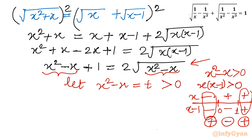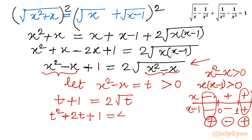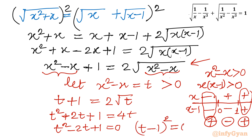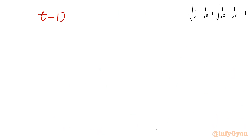Now let us consider t + 1 equals 2 square root of t. Squaring both sides: t² + 2t + 1 equals 4t. Taking 4t to the left: t² − 2t + 1 equals 0, which is (t − 1)² = 0. So we get t equal to 1 with multiplicity 2.